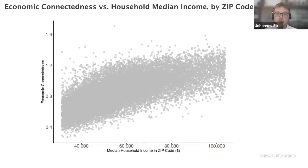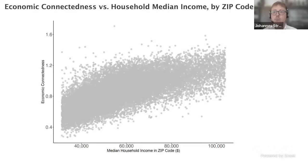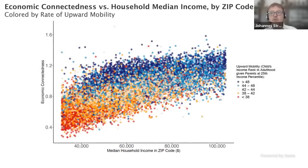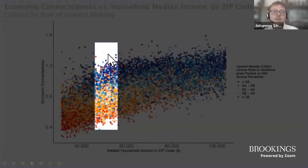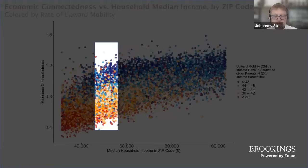Interestingly, holding income fixed — looking at vertical slices of the graph — you still find large differences in economic connectedness. Two areas with the same income composition might have very different degrees of cross-class interaction. When we color the dots by degree of upward income mobility, we find that areas with more economic connectedness have higher upward income mobility even holding income fixed. On the flip side, areas with similar degrees of connectedness but widely different average incomes don't show substantial differences in upward income mobility.